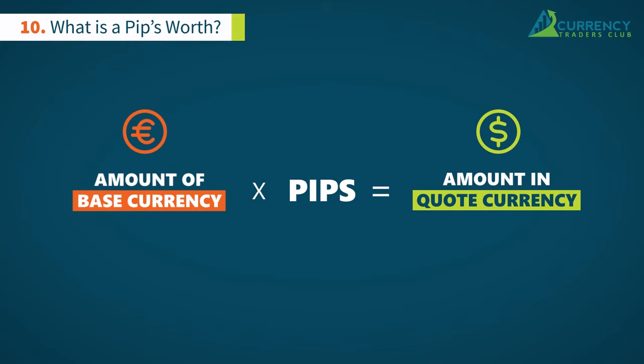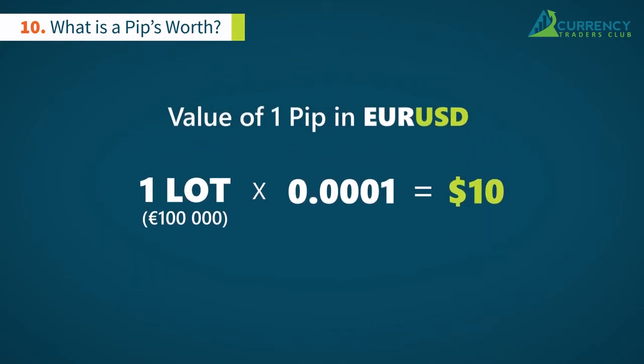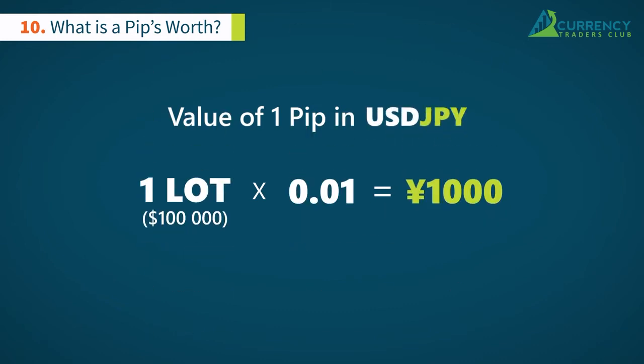If you want to find out how much one pip is worth in EURUSD per lot, or 100,000 units of the base currency, it would look like this. For yen-based currency pairs, the result is a little different because the pip corresponds to the second decimal digit.